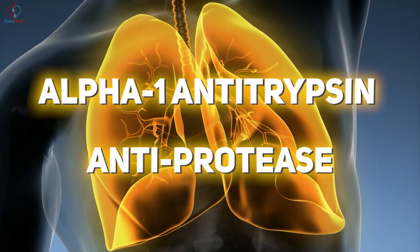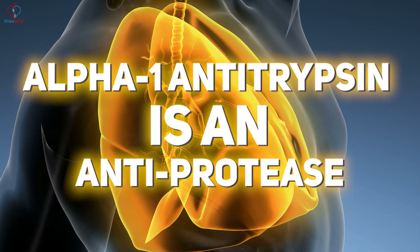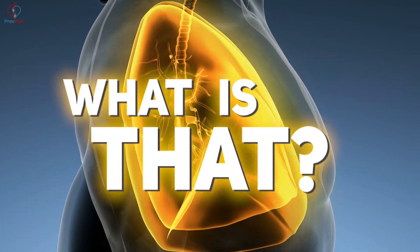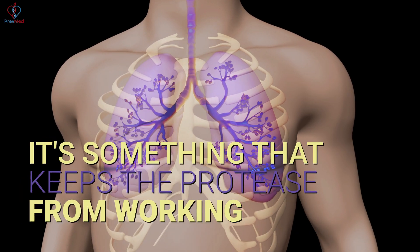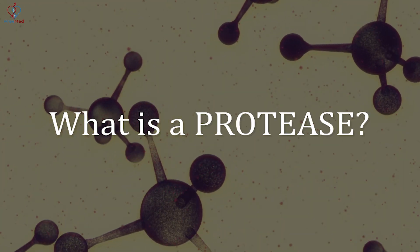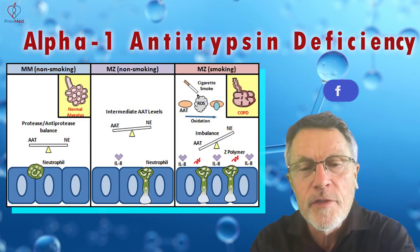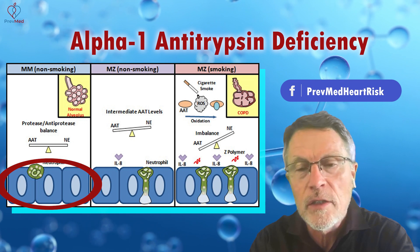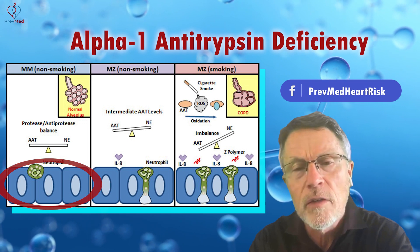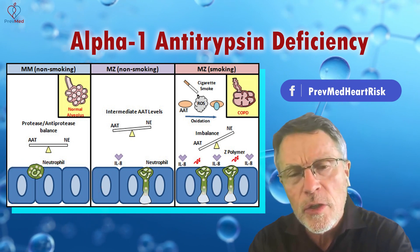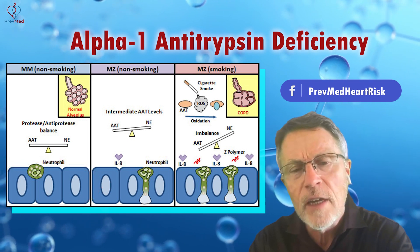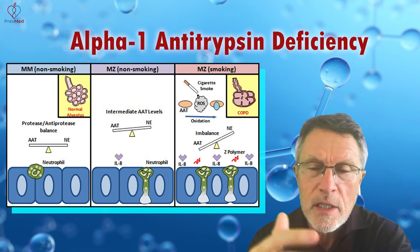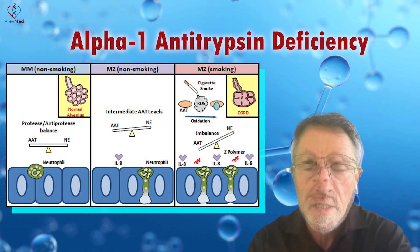Alpha-1 antitrypsin is an antiprotease. What is that? It's something that keeps a protease from working. What's a protease? The root words 'protein' and '-ase' means to strip away. When inflammation occurs, you have to have a thing called protease — something that dissolves the protein.